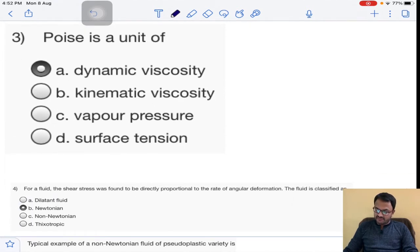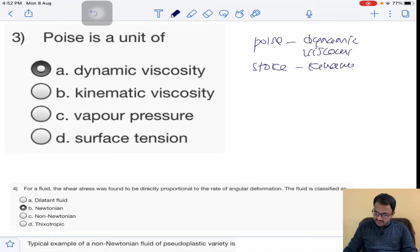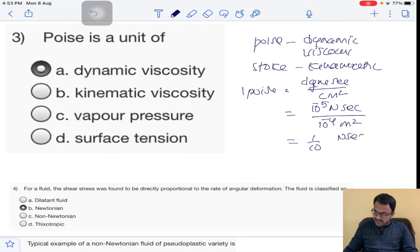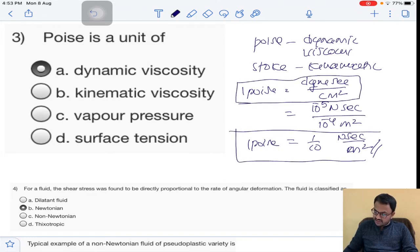Next question: Poise is a unit of dynamic viscosity, and Stoke is a unit of kinematic viscosity. One poise equals dyne second per centimeter square. If we convert this, one dyne equals 10^-5 Newton. So one poise equals 1/10 Newton second per meter square. Poise is a unit of dynamic viscosity.